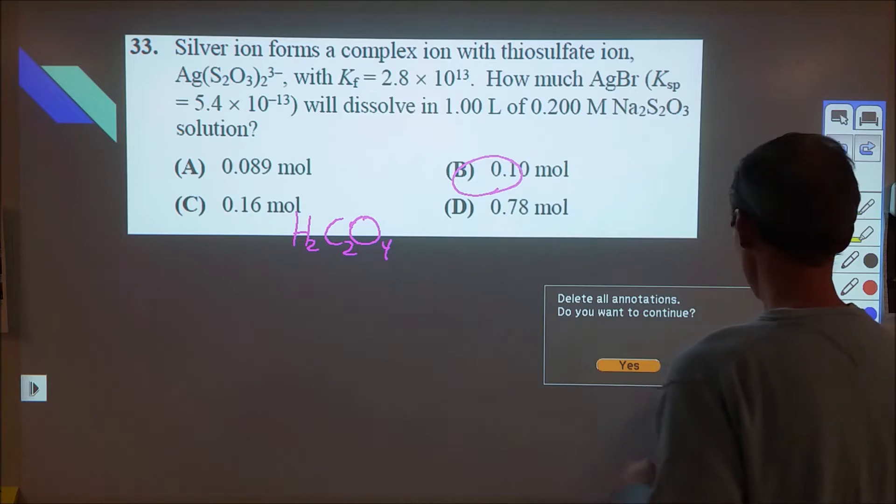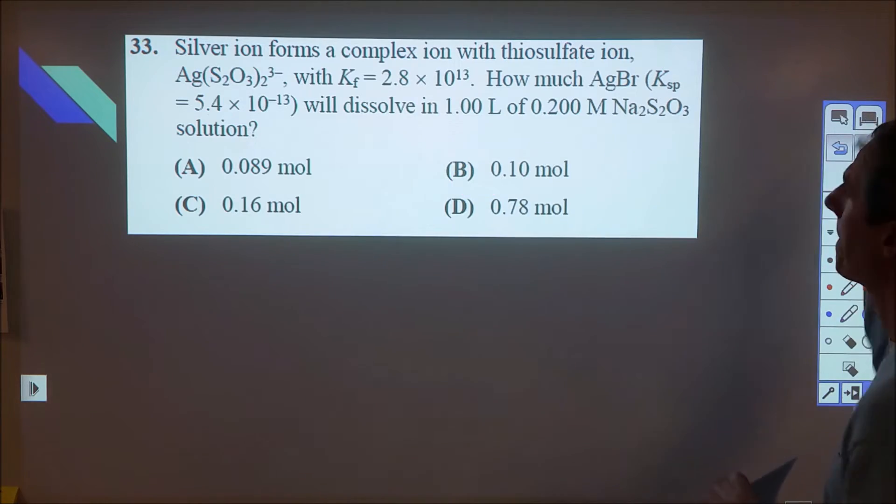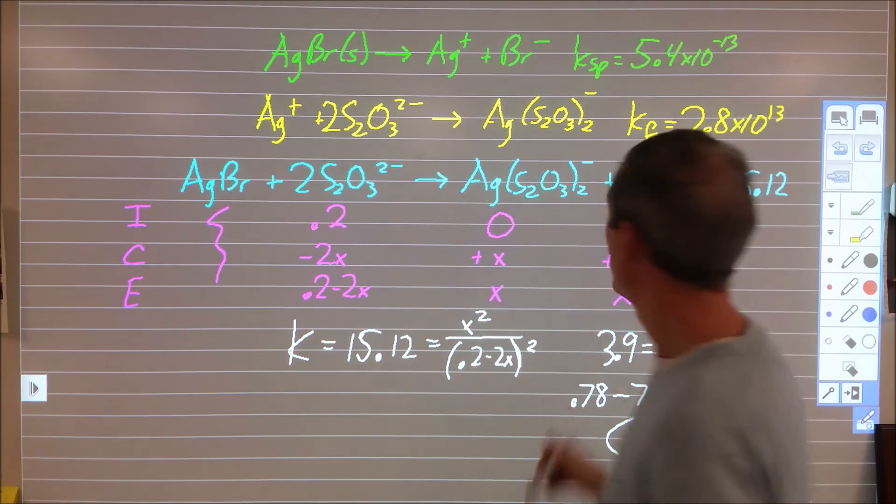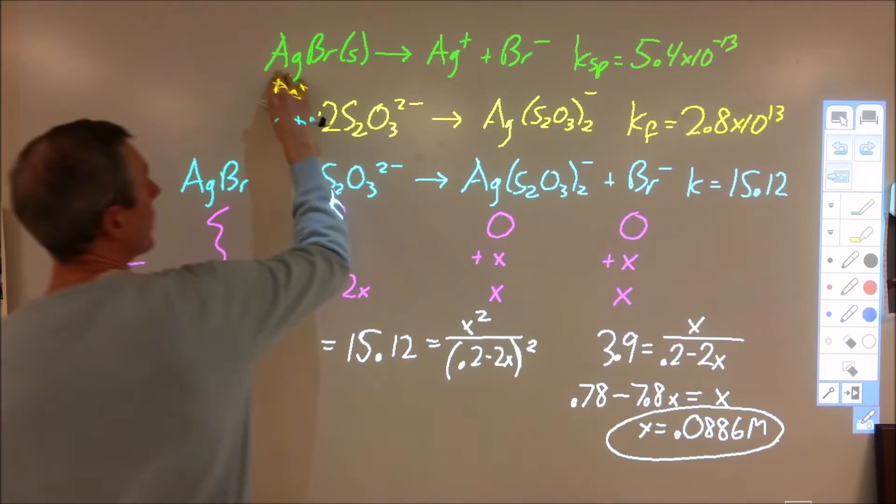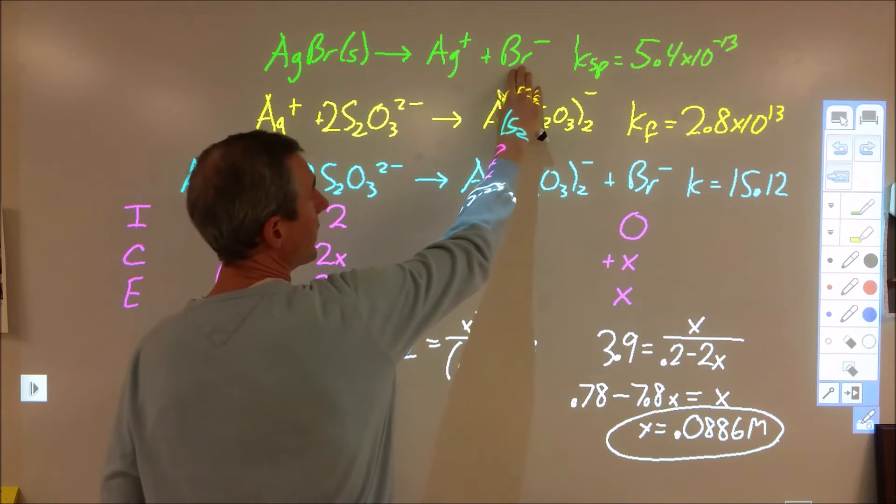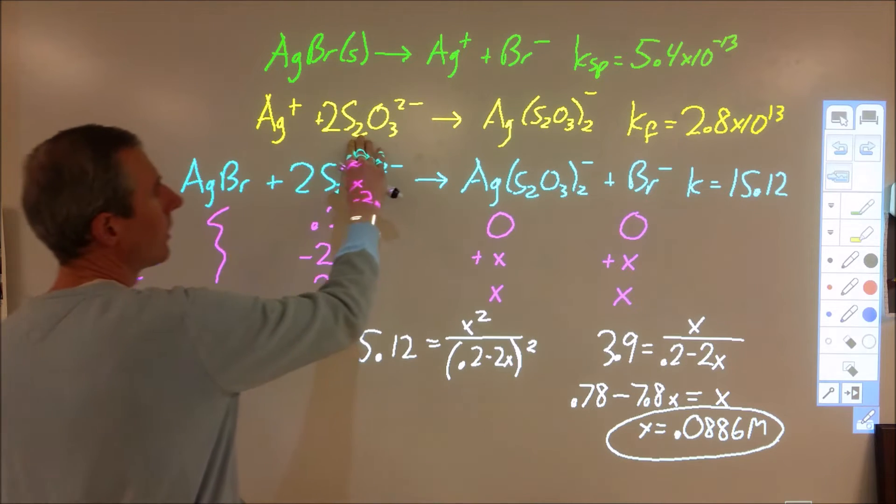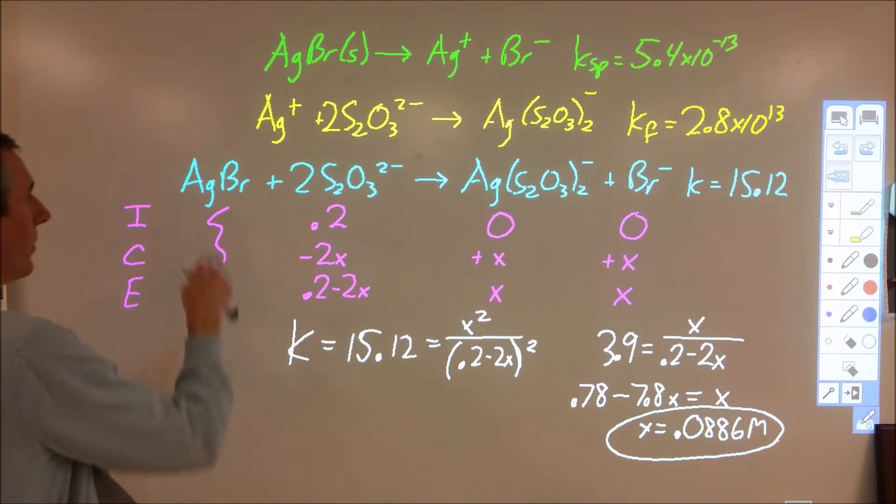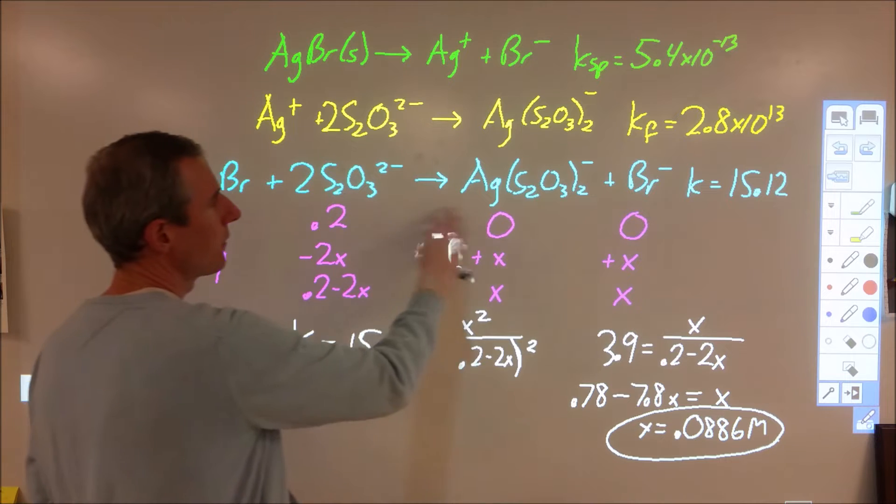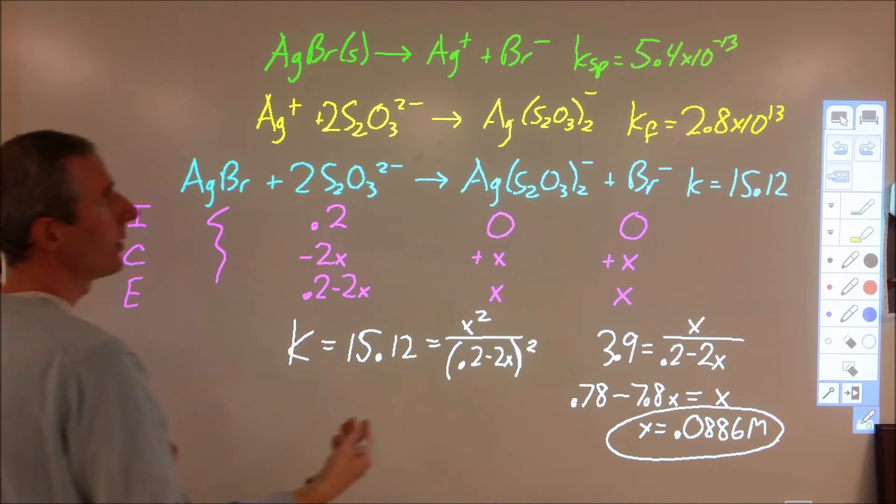Okay, 33 is quite a bit here, so I've set this up on the other board. So here's what we have going on. Let's look at this background. So we have silver bromide. It has a KSP value. It has silver forming a complex ion, and it gives us the equilibrium constant for that.